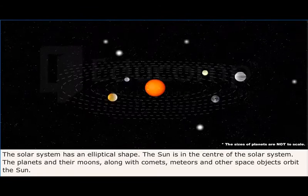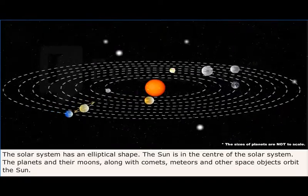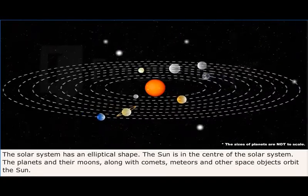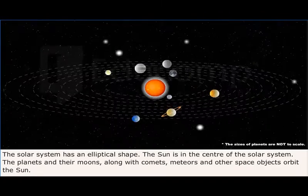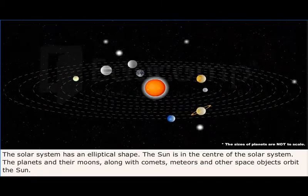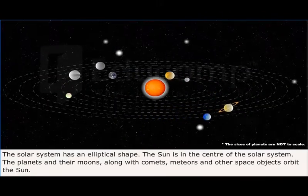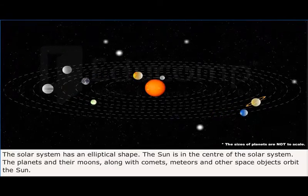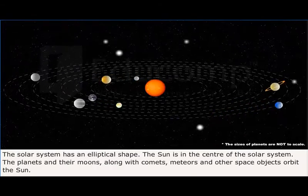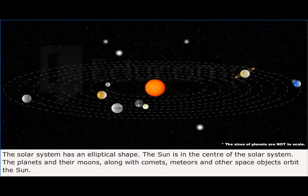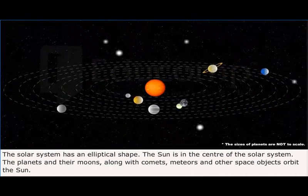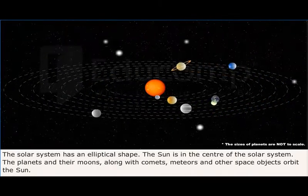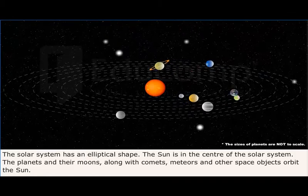The solar system is elliptical in shape. The Sun is in the center of the solar system. The planets and their moons, along with comets, meteors, and other space objects, orbit the Sun.